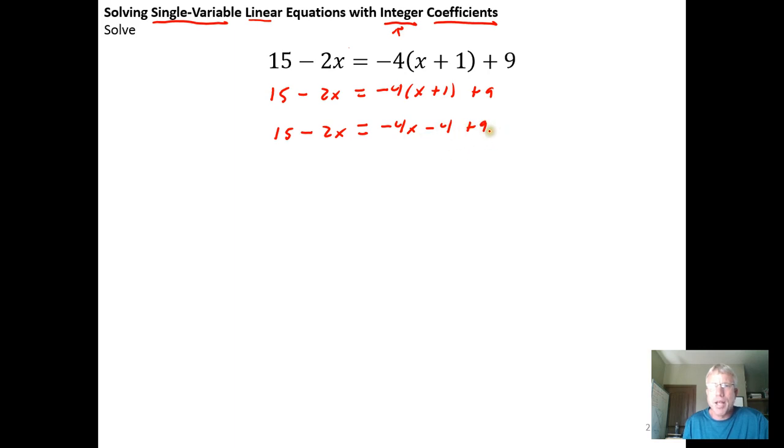And here I see that I have like terms. Neither of these have the variable x. So I know how to add them. So I'm just going to go ahead and do that. So negative 4 plus 9 is plus 5.